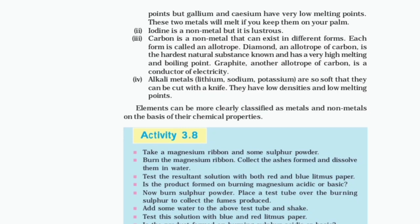Iodine is a non-metal but it is lustrous. Carbon is a non-metal that can exist in different forms — each form is called an allotrope. Diamond, an allotrope of carbon, is the hardest natural substance known and has a very high melting and boiling point. Graphite, another allotrope of carbon, is a conductor of electricity. Alkali metals — lithium, sodium, potassium — are so soft that they can be cut with a knife. They have low densities and low melting points.